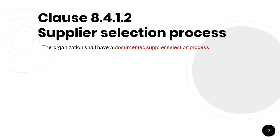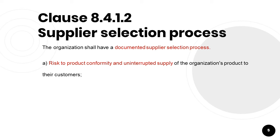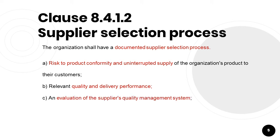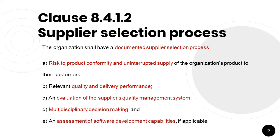Clause 8.4.1.2 explains the requirement of the supplier selection process. It states the organization shall have a documented supplier selection process. The supplier selection process shall include: an assessment of the selected supplier's risk to product conformity and uninterrupted supply of the organization's products to customers; relevant quality and delivery performance; an evaluation of the supplier's quality management system; multidisciplinary decision making; and an assessment of software development capability, if applicable.